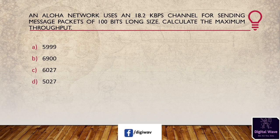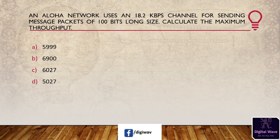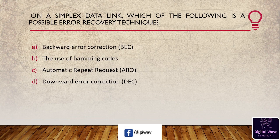Next question: an ALOHA network uses an 18.2 kbps channel for sending message packets of 100 bits long. Calculate the maximum throughput. Options are: 5999, 6900, 6027, and 5027. The answer is C — 6027.